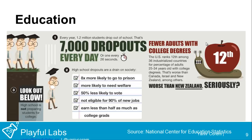Another industry that suffers from disengagement is education. 1.2 million students drop out every year — that's about 7,000 every day, or one every 26 seconds. The United States ranks 12th among countries for the percentage of adults aged 25–34 with college degrees, which is worse than New Zealand. This is a cause for concern.